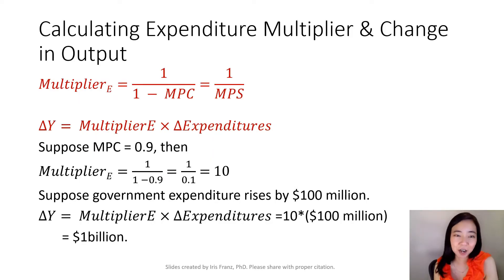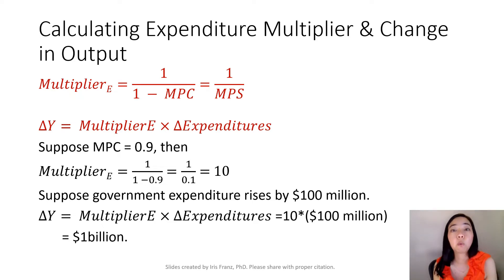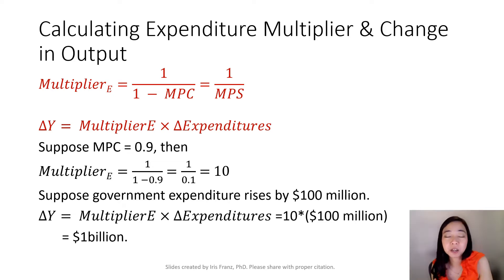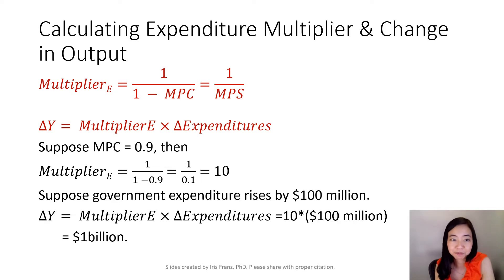Here is how we calculate the expenditure multiplier. The expenditure multiplier is equal to 1 over 1 minus MPC. But 1 minus MPC is also equal to MPS. So the expenditure multiplier is also equal to 1 divided by MPS.